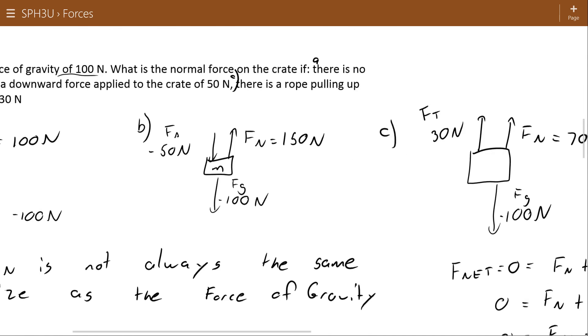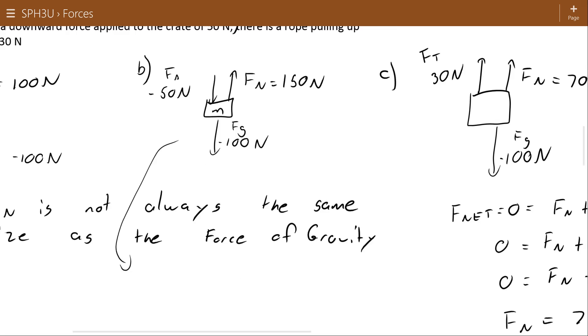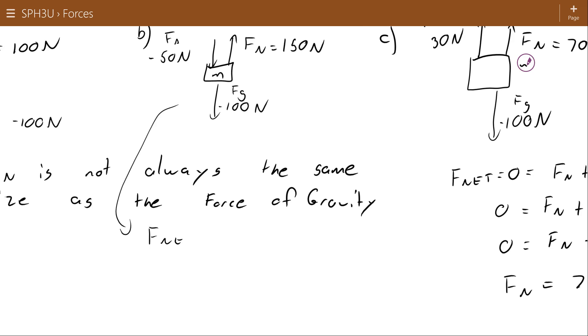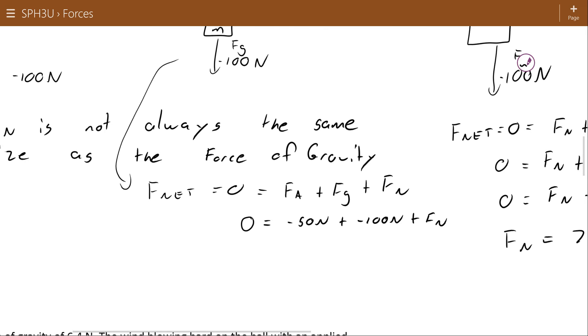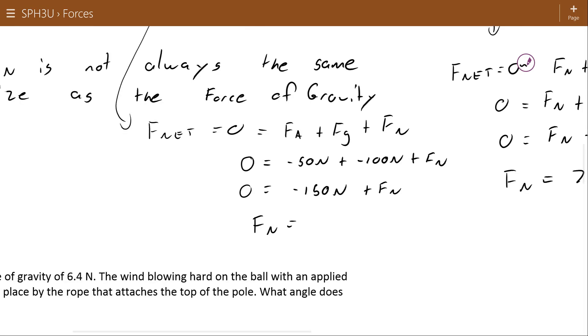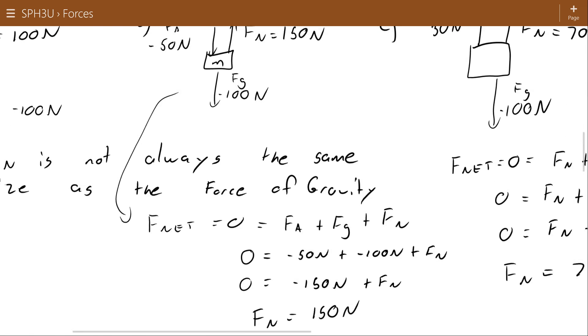Maybe just to be complete, I'm going to show that same calculation for B. So again, the crate is at rest on the table, which means its acceleration or its net force is equal to zero. We have an applied force, we have a force of gravity, and we have a normal force. The applied force is negative 50 Newtons, the force of gravity is negative 100 Newtons, and the normal force. So those two total to negative 150 Newtons. And here we can see mathematically what we can see by inspection here, that the normal force will have to be 150 Newtons to compensate for both of these forces. This mathematics just might be helpful if the numbers aren't as simple as they were in this problem.